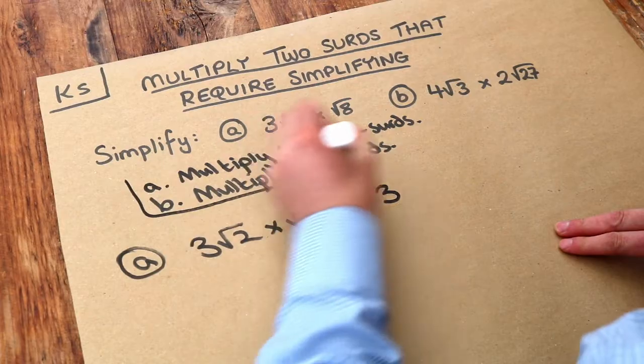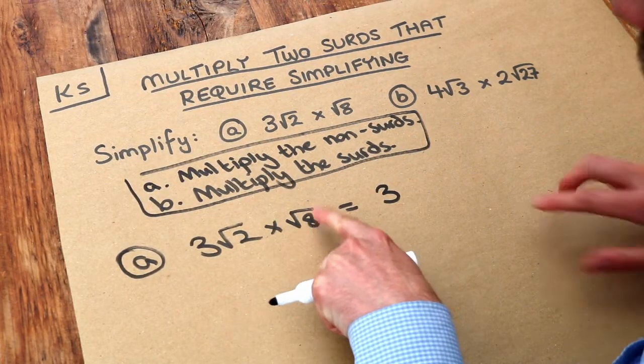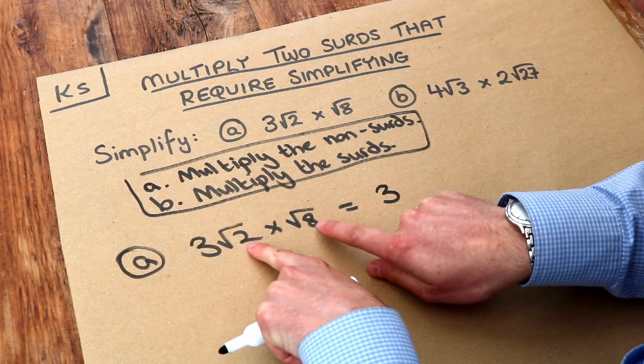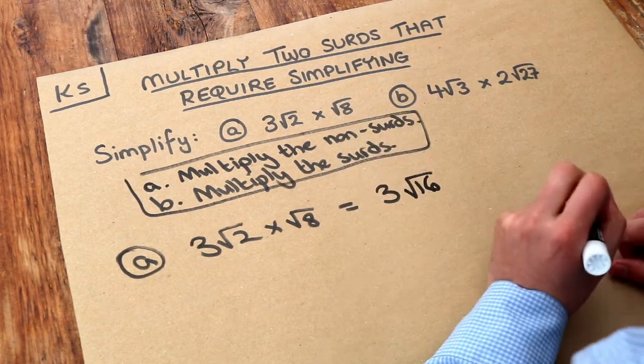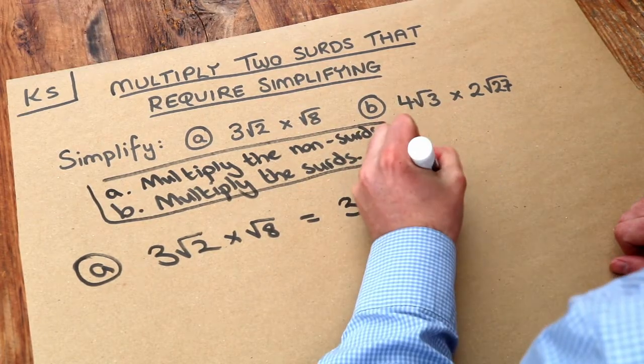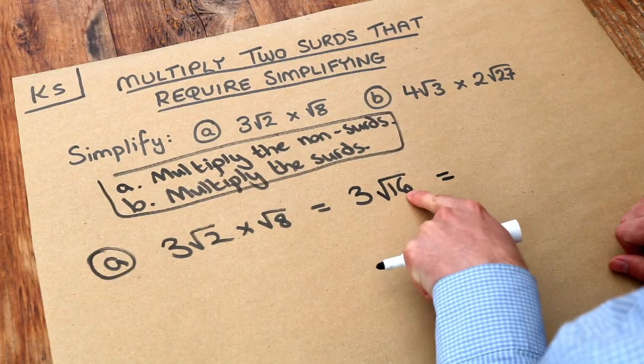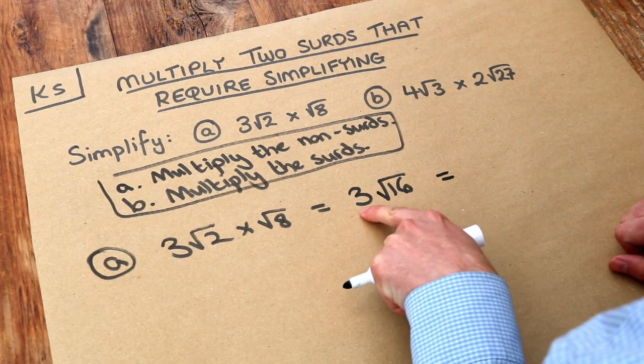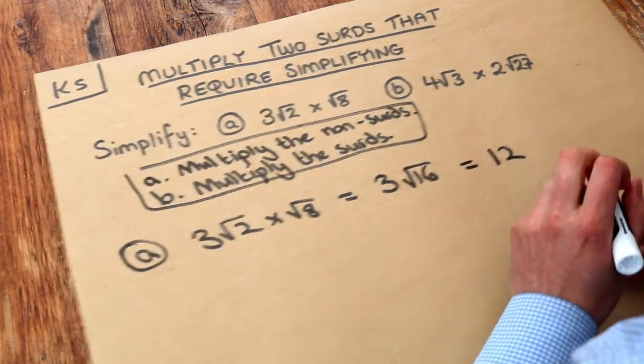And then secondly we multiply the surds. So root two times root eight, remember you just multiply those two numbers together. Two times eight is sixteen, so we get root sixteen. And then as per the title, we just need to subsequently simplify that. So what is the square root of sixteen? Well it's just four, isn't it, because sixteen is a square number. So it's three times by four, which is twelve, and that is the final answer.